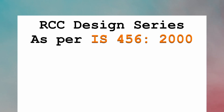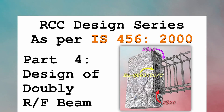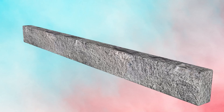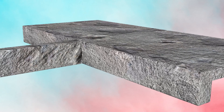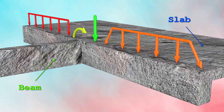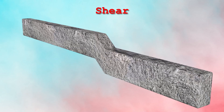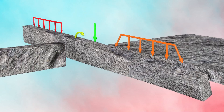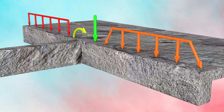Welcome to Part 4 of the RCC design series on design of doubly reinforced beam. A beam is a flexural member subjected to load from adjacent slab and beams in the form of uniformly distributed, uniformly varying or point load and moments. These loads cause bending, shear and torsional forces in the beam. Using IS-456-2000, we will design the beam ensuring that it is safe under such loads.